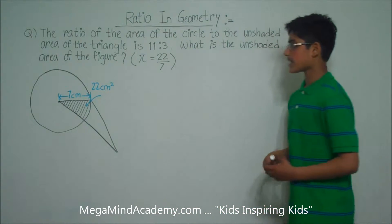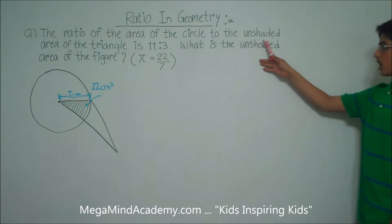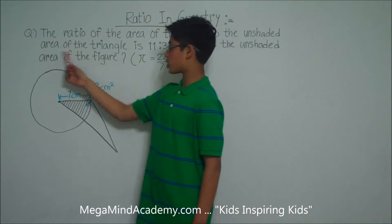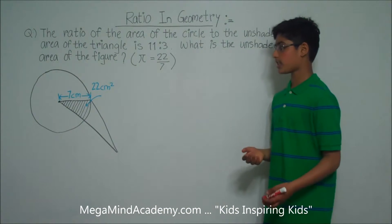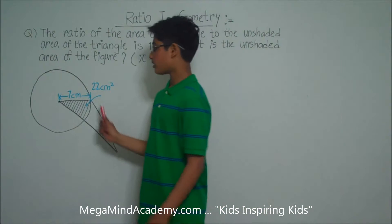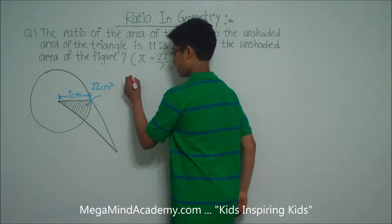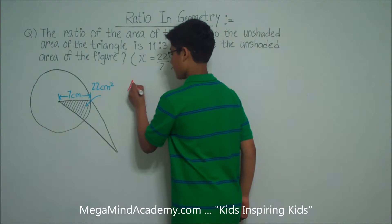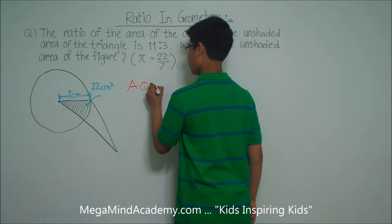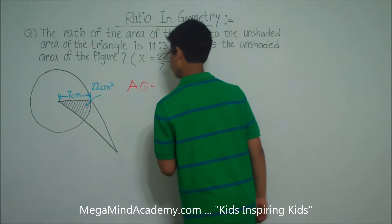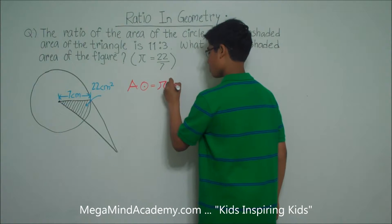It says in the problem that the ratio of the area of the circle to the unshaded area of the triangle is 11 to 3. So the first step in solving this problem is finding the area of the circle. The area of the circle — A for area — is equal to pi r squared.